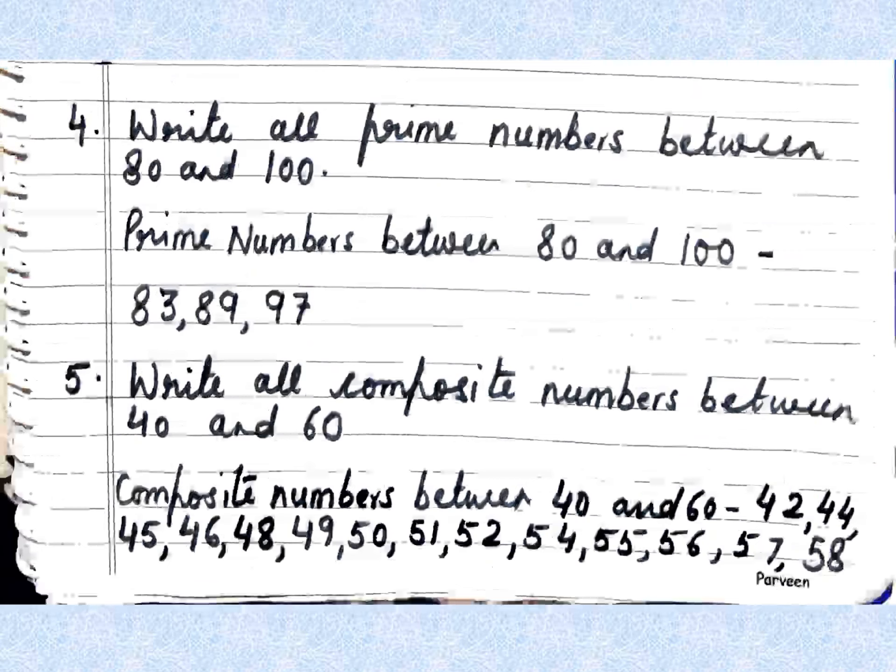Last question: write all composite numbers between 40 and 60. Composite numbers have more than two factors. These are: 42, 44, 45, 46, 48, 49, 50, 51, 52, 54, 55, 56, 57, and 58. Note that 59 is not included as it is a prime number.